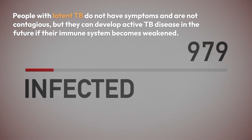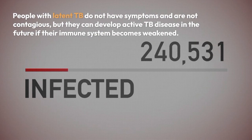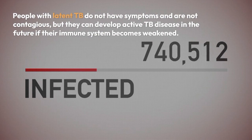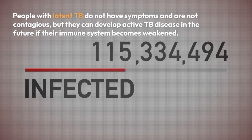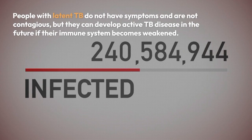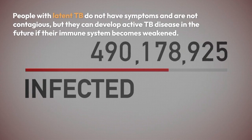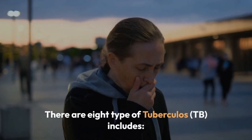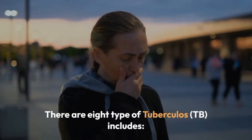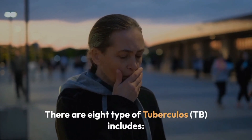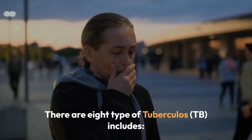People with latent TB do not have symptoms and are not contagious, but they can develop active TB disease in the future if their immune system becomes weakened. There are 8 types of tuberculosis.